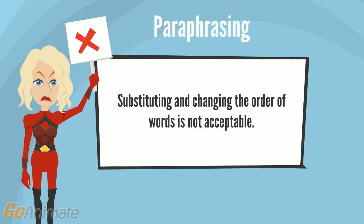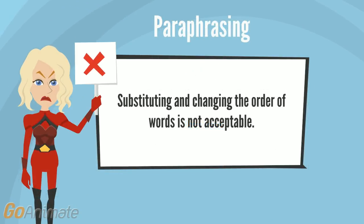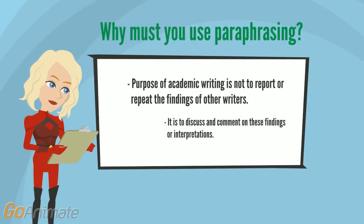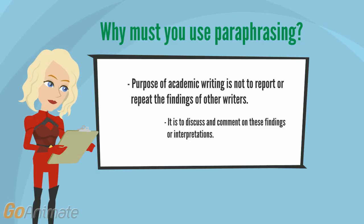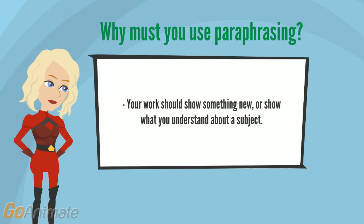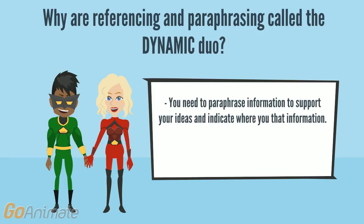Merely substituting and changing the order of words is not acceptable. The purpose of academic writing is not to report or repeat the findings or interpretations of other writers; it is to discuss and comment on these findings and interpretations. In academic writing, your work should say something new or show what you understand about a subject. To create a strong piece of academic writing, you need to paraphrase information to support your ideas.